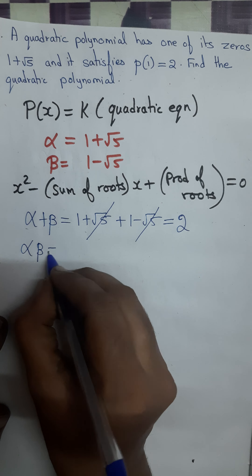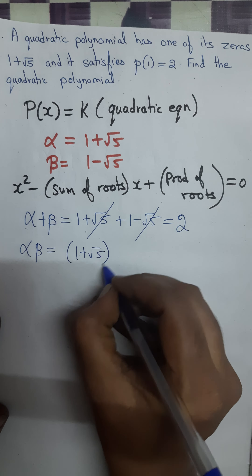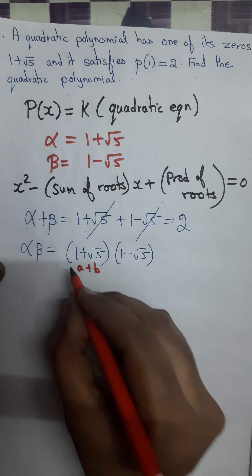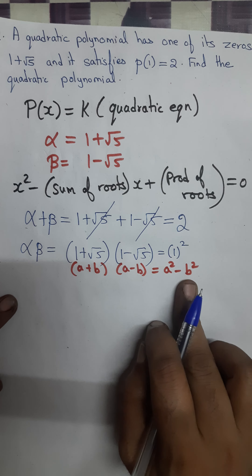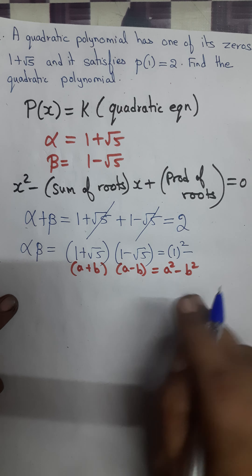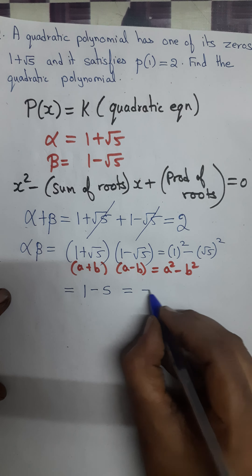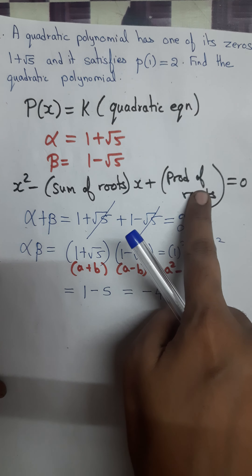Now let us find the product of the roots, alpha times beta. Alpha is 1 plus root 5 and beta is 1 minus root 5. This looks like the algebraic formula (a plus b)(a minus b) equals a squared minus b squared. So using this identity, we get 1 squared minus (root 5) squared, which is 1 minus 5, equal to minus 4. So the product of the roots is minus 4.